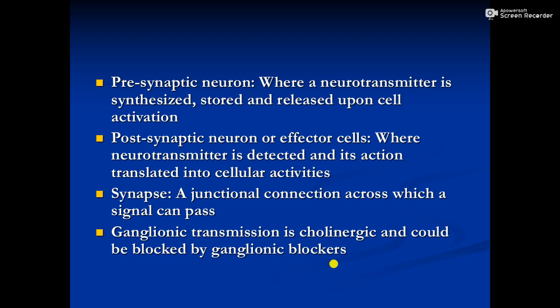Pre-synaptic neurons are the place where a neurotransmitter is synthesized, stored, and released upon cell activation — so it is the home where neurotransmitters are synthesized, stored, and released only when there is cell activation. Post-synaptic neurons are the place where the neurotransmitter is detected and its action is translated into different cellular activities. A synapse is a junctional connection across which a signal can be passed. Ganglionic transmission is cholinergic and can be blocked only by providing ganglionic blockers.